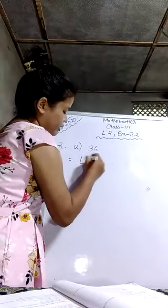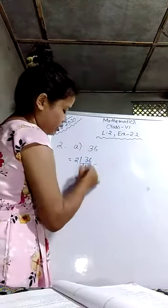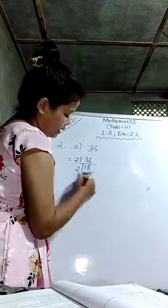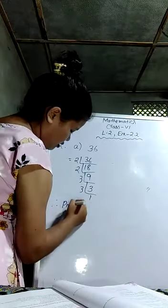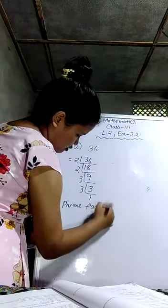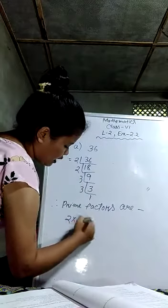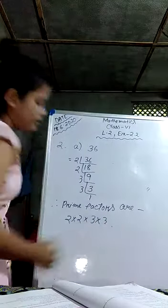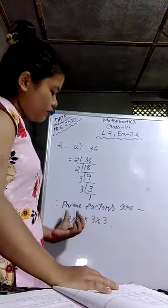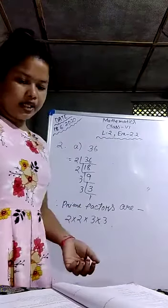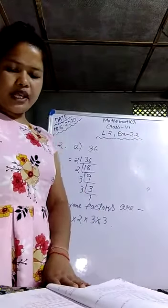So, for 36: 2 times 18 is 36, then 2 times 9 is 18, then 3 times 3 is 9, then 3 times 1 is 3. Therefore, the prime factors are 2 × 2 × 3 × 3. If we multiply any number by 1 we get that number, so no need to write 1. So prime factors are 2 × 2 × 3 × 3. From B up to J, it is your homework.